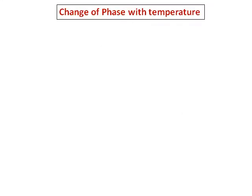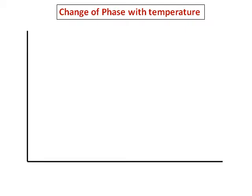Now we are going to consider how a phase changes as temperature changes. Let's plot a graph. I have the y-axis and the x-axis. We will represent temperature on the y-axis, and on the x-axis we are going to take heat, represented as Q.